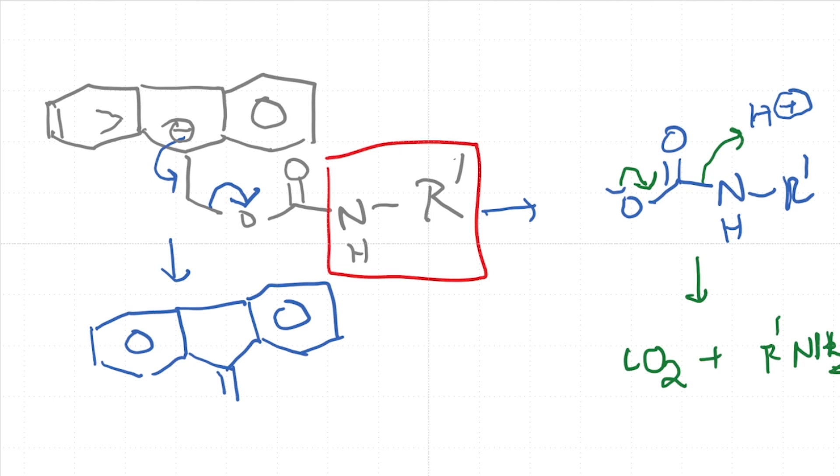So this is a very useful and important protective group because if your amino acid can be protected as this entity, then you are going to be able to carry out a number of other reactions on the amino acid while you keep the amine part of it stable. And then whenever you want to deprotect, all you need to do is to add some amount of base and deprotect it. This is called the FMOC protecting group.